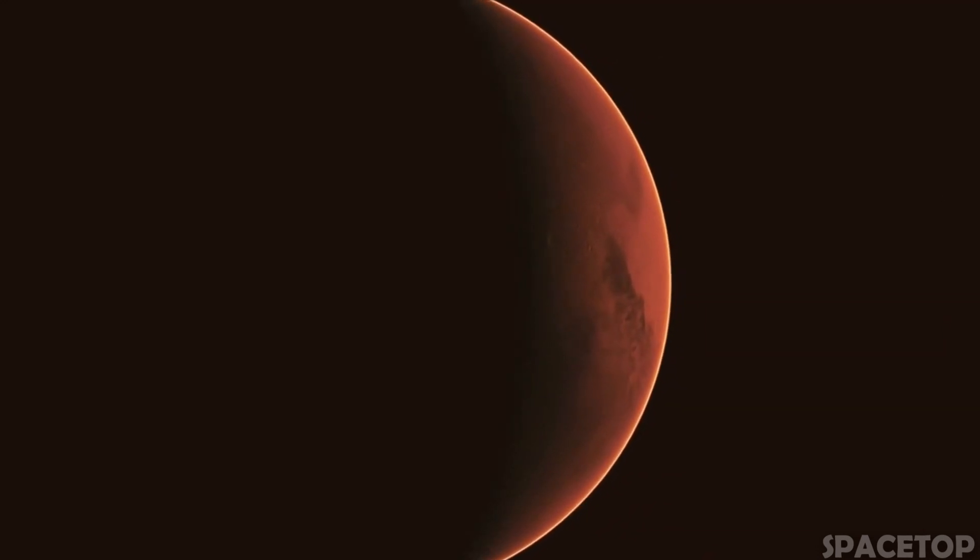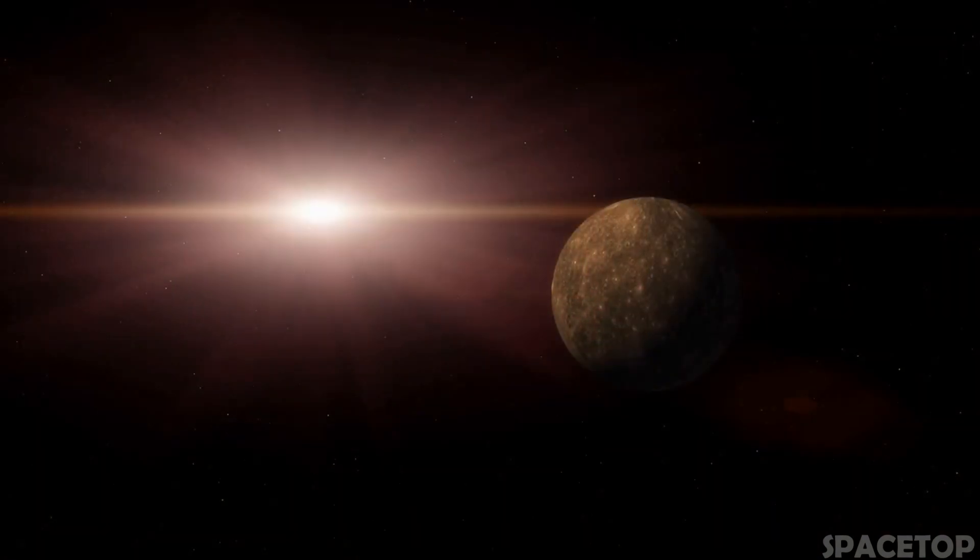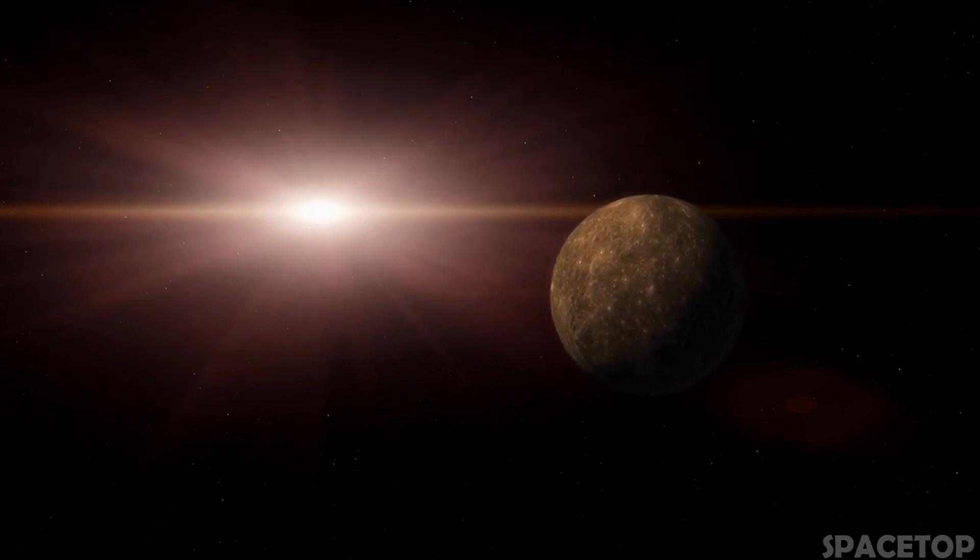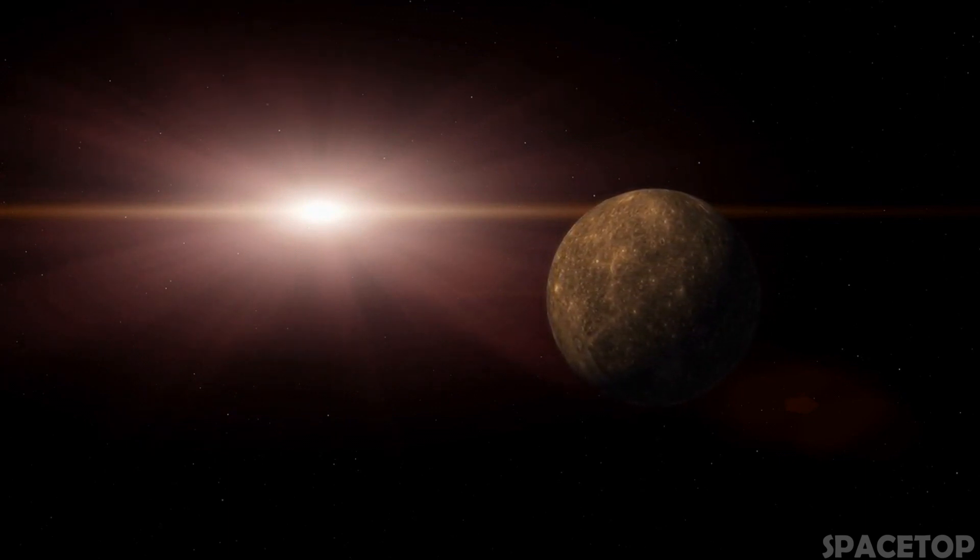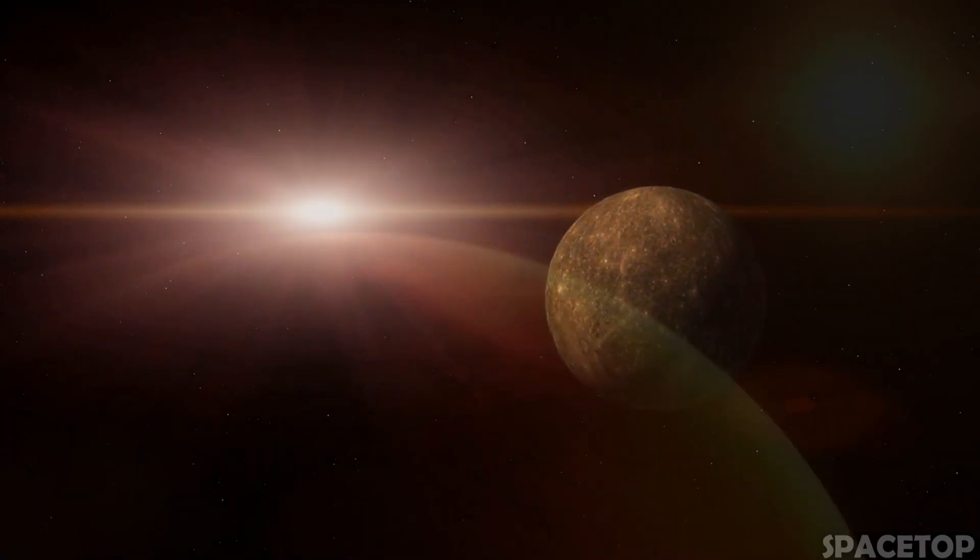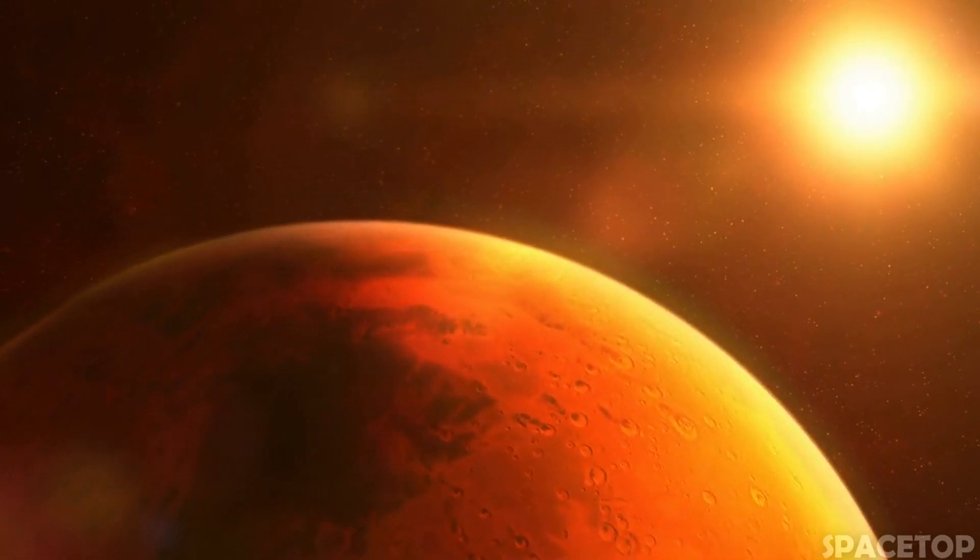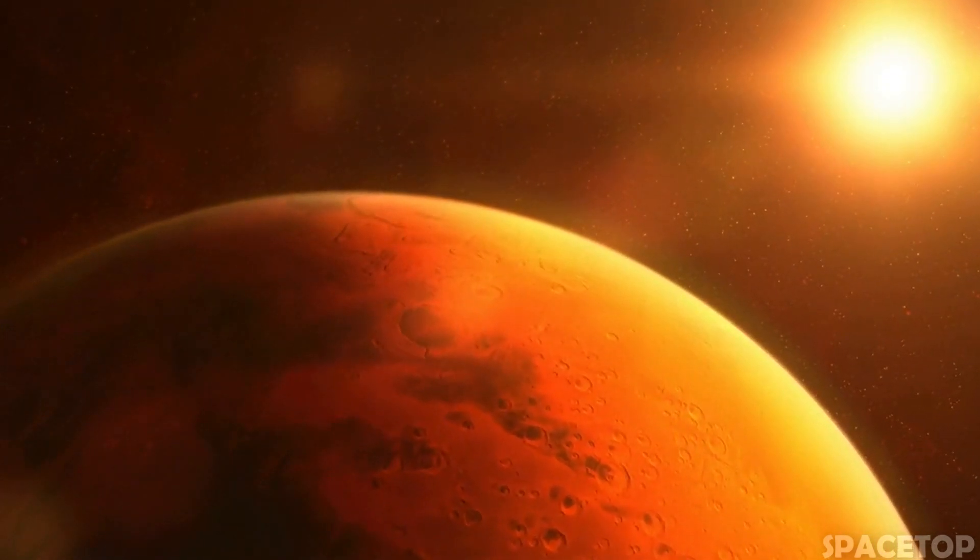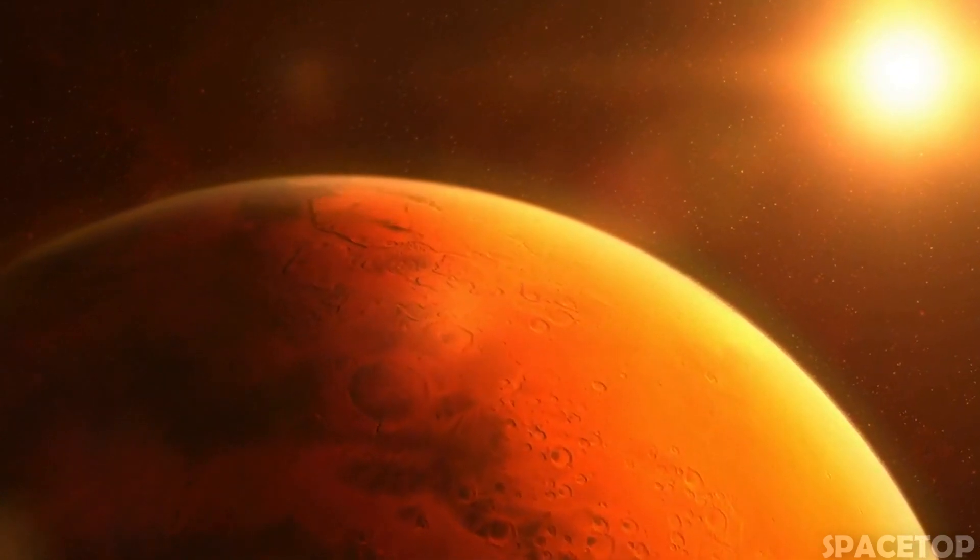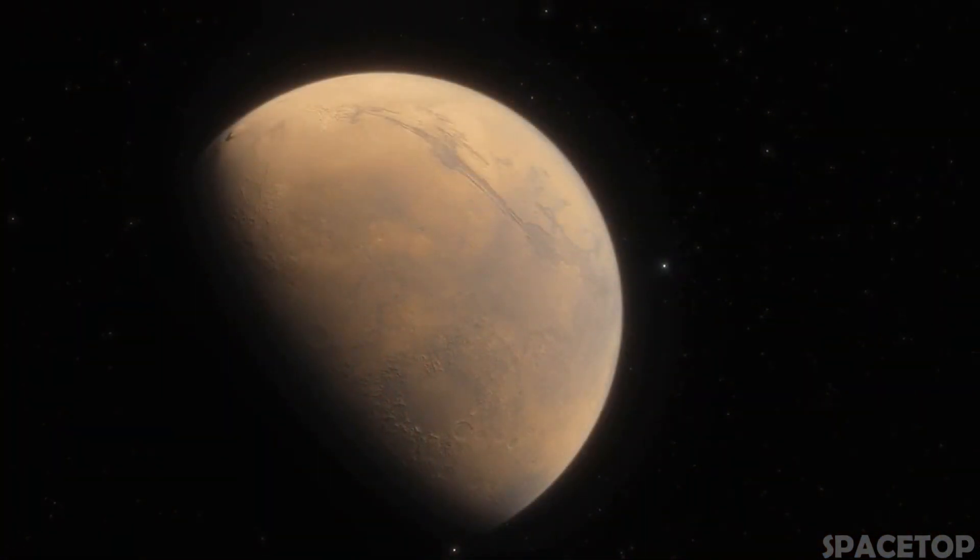The exoplanet orbits an incredibly dense and tiny neutron star with a diameter of about 20 kilometers. Just one teaspoon of the substance of this star on Earth would weigh billions of tons. The star is also a millisecond pulsar that emits beams of radiation rotating every 5 milliseconds. That's about 10,000 revolutions per minute.